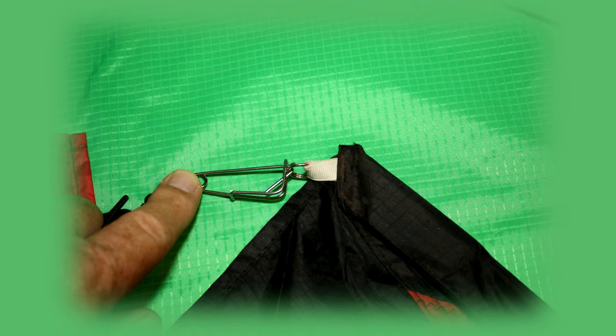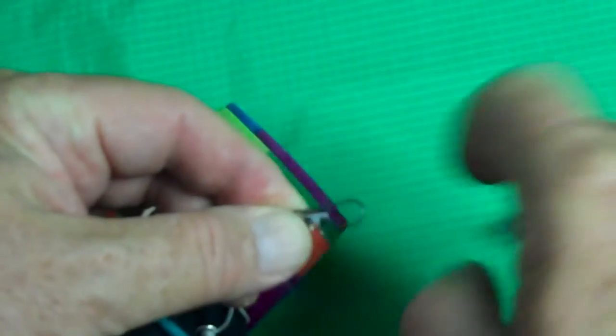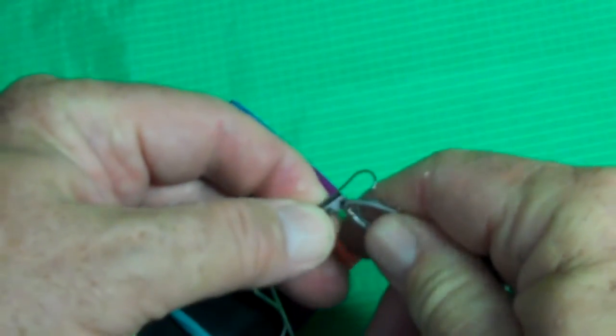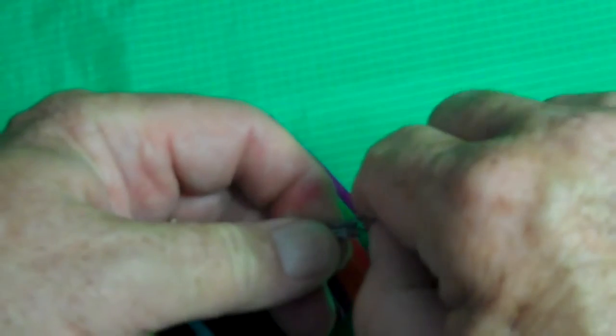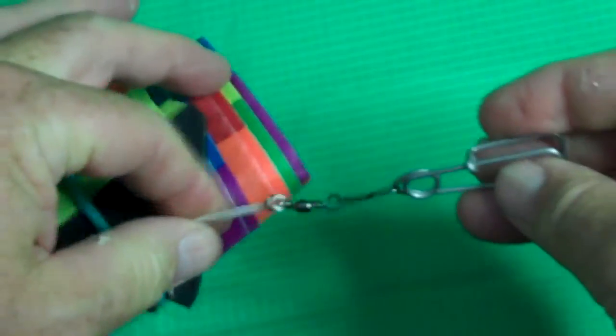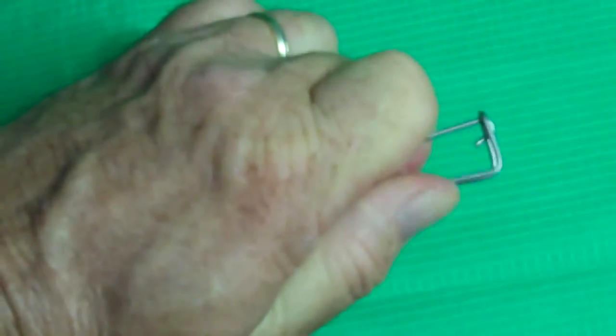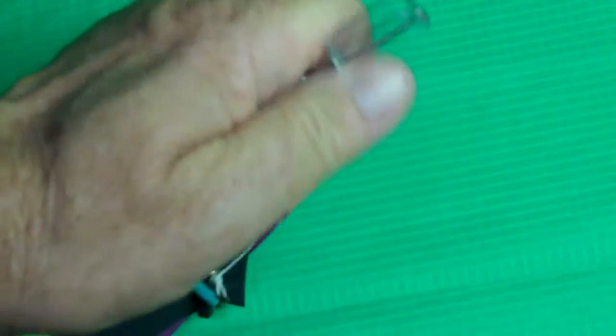Next, use the spring clip and swivel that your kite tail came with and simply clip it onto the trotline clip. Done!